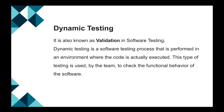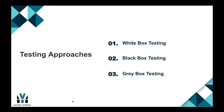Dynamic testing is also known as validation in software testing. Dynamic testing is a software testing process that is performed in an environment where the code is actually executed. This type of testing is used by the team to check the functional behavior of the software.